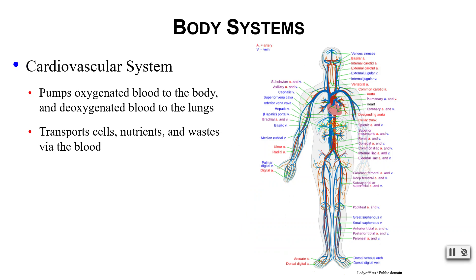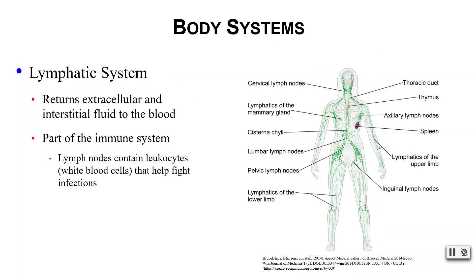Your cardiovascular system is involved in pumping oxygenated blood to the body and deoxygenated blood to the lungs. In the blood we are also transporting cells, nutrients, and waste products for removal. Your lymphatic system returns extracellular and interstitial fluid to your blood. It's also part of your immune system — lymph nodes contain leukocytes, also known as white blood cells, which help us fight infections.